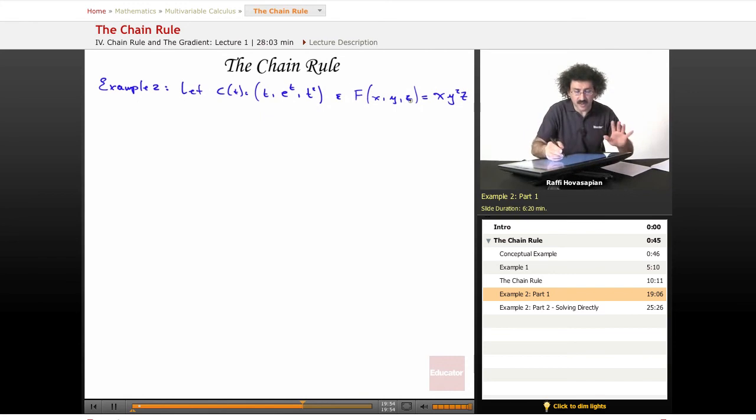Okay. So first of all, let's talk about what's going on here. We're going to form the composite function. We're going to be forming f of C of T. That's what we're going to be doing. Well, f of C of T is x, y, z. In this case,